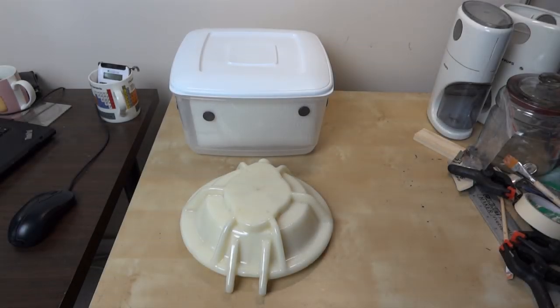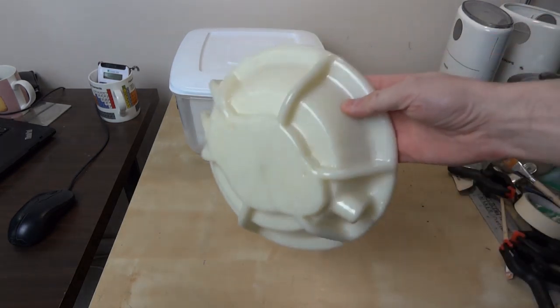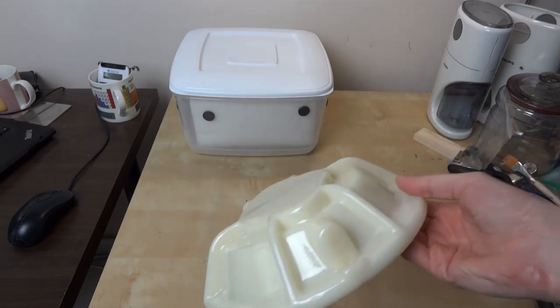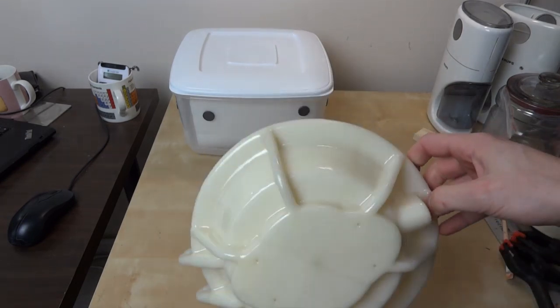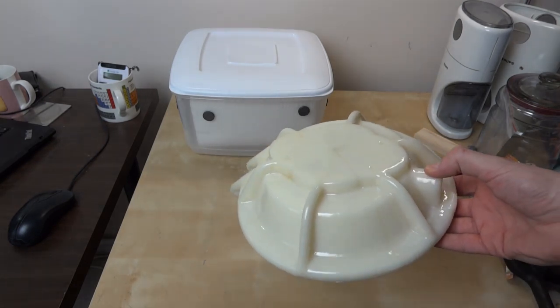So this is part three of my Back to the Future Mr. Fusion build. Last time we looked at putting the lid together, which was 3D printed in multiple sections, which have all been stuck together with acetone, and then we did acetone vapor bath smoothing. The material it's printed in is ABS, and that dissolves in acetone.